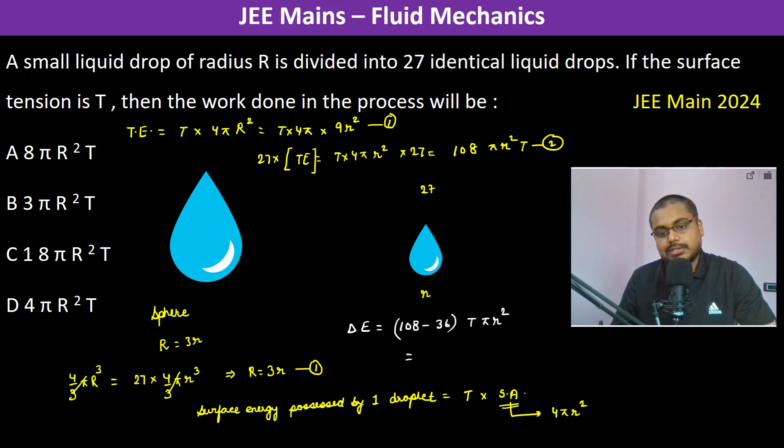108 minus 36 is 72 into T into pi r square. Now r is R by 3, so r square divided by 9. This becomes 8 pi R square into T. So that much energy is required to be given, so therefore the answer is going to be A. Thank you.